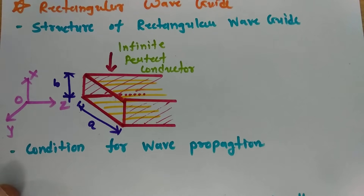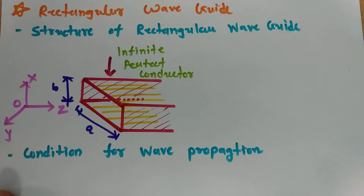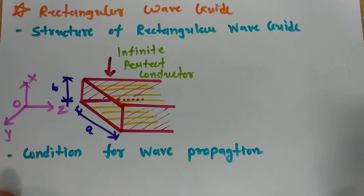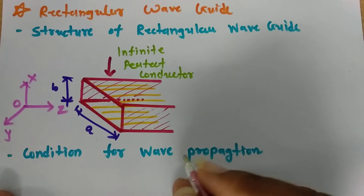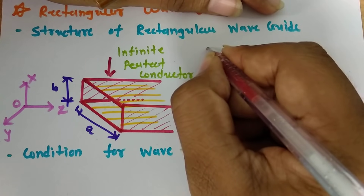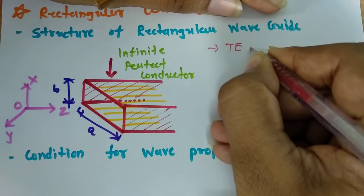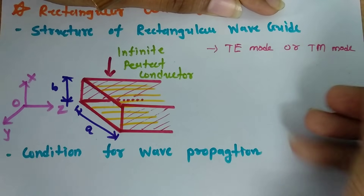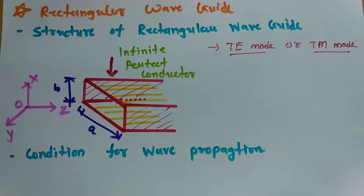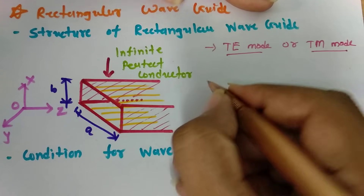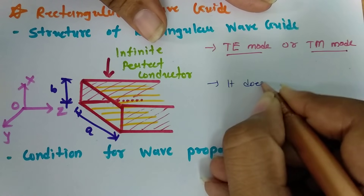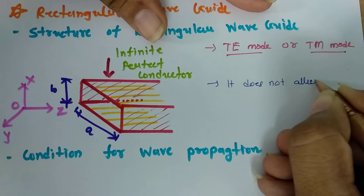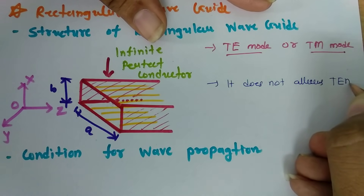This structure has advantages like less attenuation loss compared to a transmission line. Now, moving to modes of propagation in rectangular waveguide: it only allows TE mode or TM mode. These two modes are possible in rectangular waveguide.